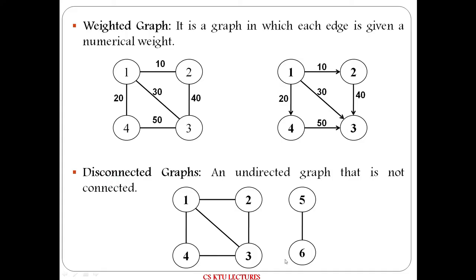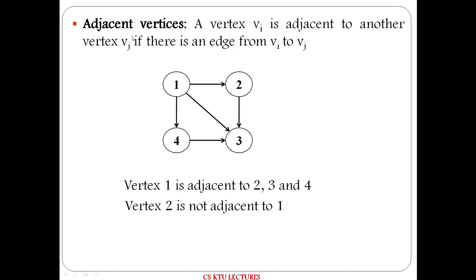Next is connected graph. It has 6 vertices: 1, 2, 3, 4 are connected, but vertices 5 and 6 are detached from the rest. This is a disconnected graph.